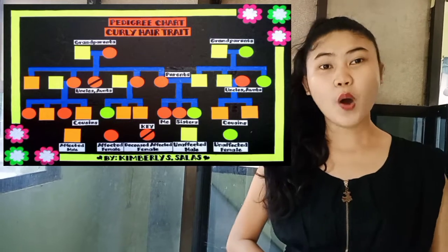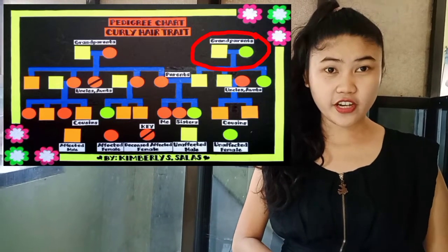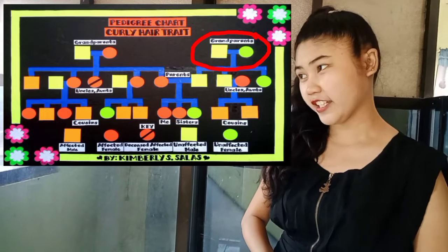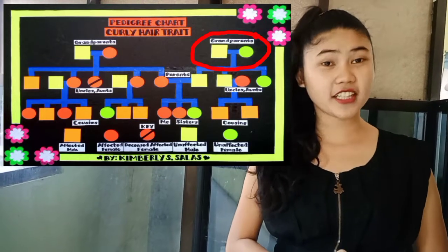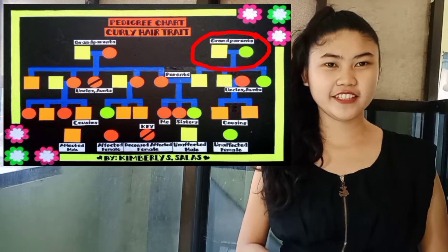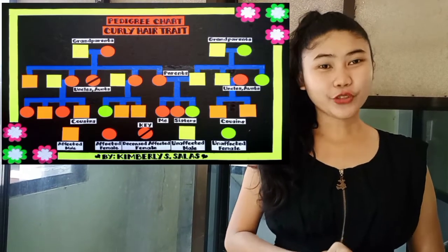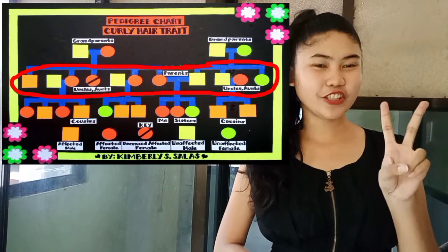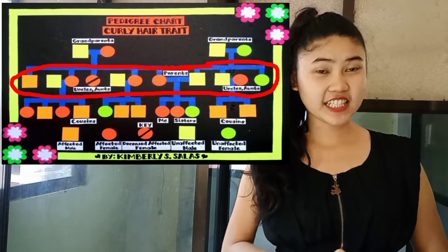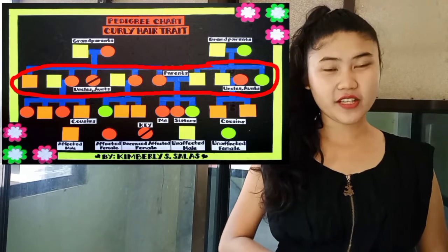However, both my grandfather and grandmother on my father's side do not possess the curly hair trait, or are unaffected. Let's proceed to the second generation, which consists of my uncles and aunts, as well as my parents.